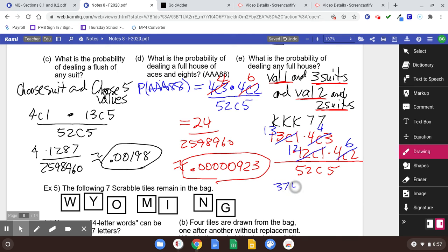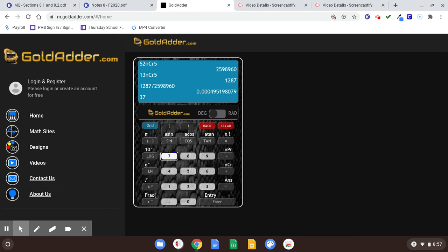So if we multiply that 13 times 4 times 12 times 6, we get 3744 over 2,598,960. This is about 0.00144.